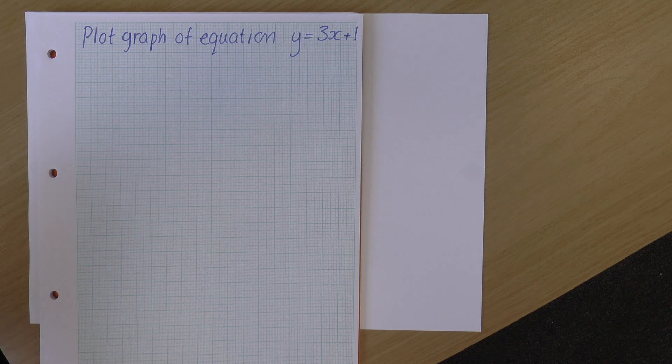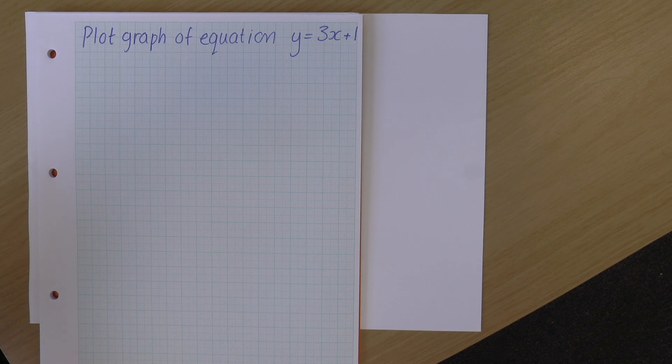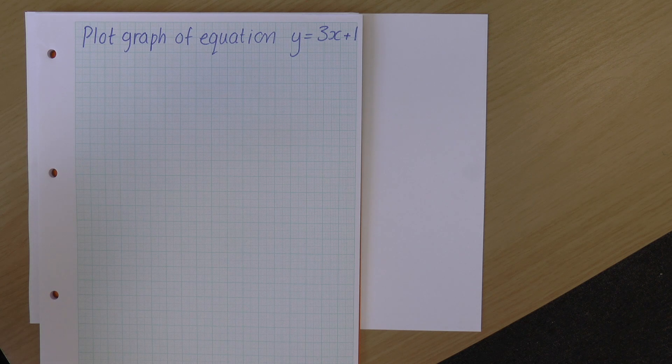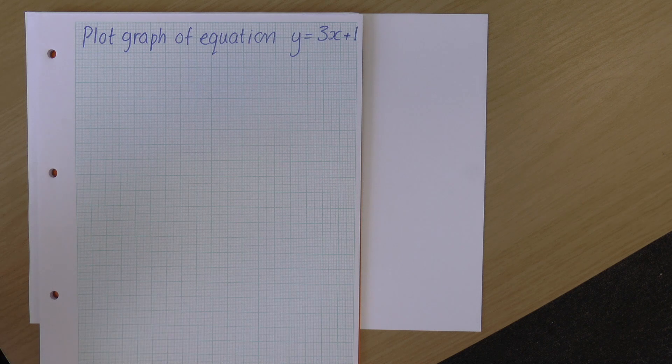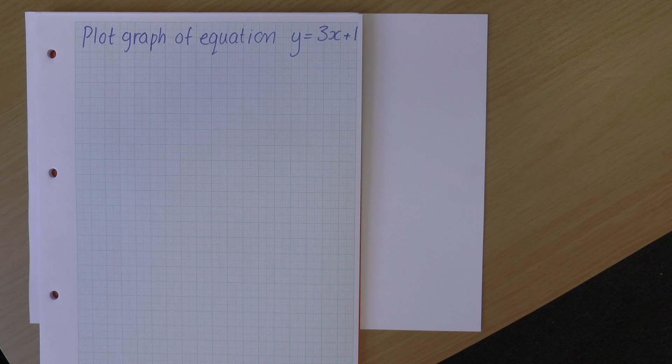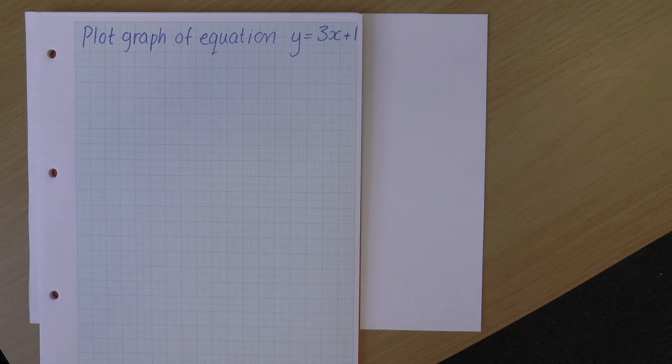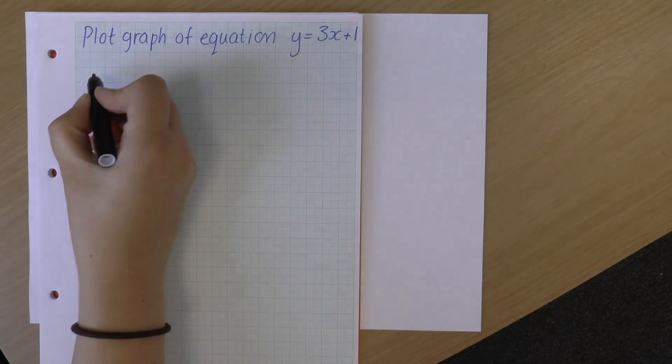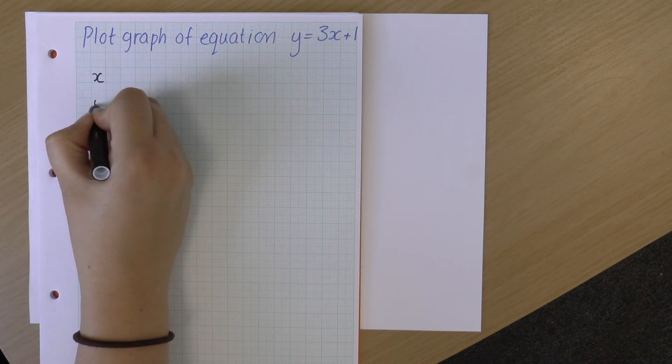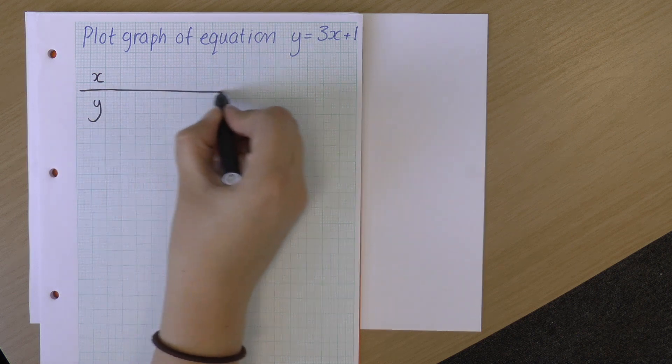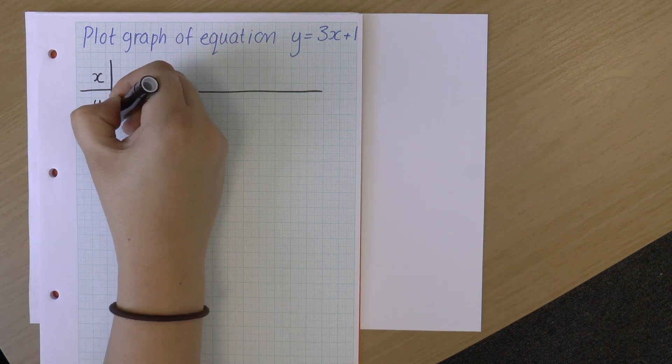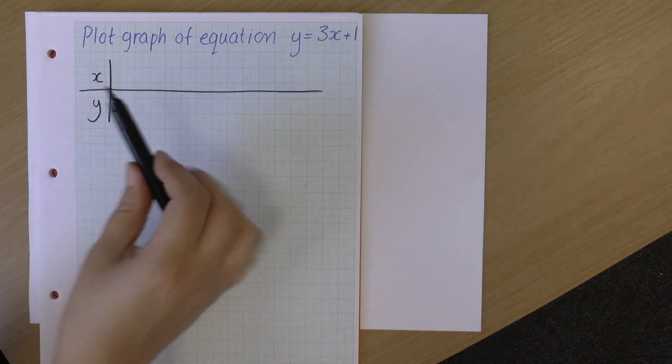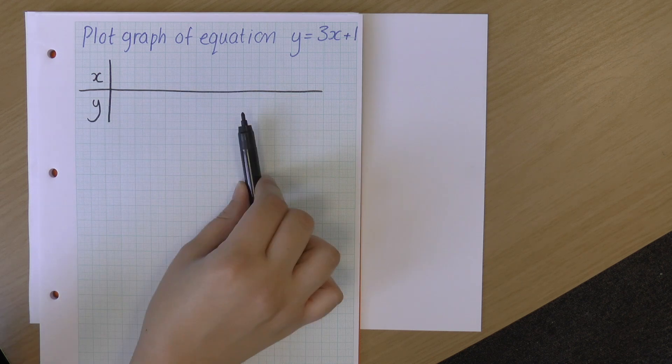So if I'm plotting a graph of equation y equals 3x plus 1, the first thing I need to do is find some values for my graph in order to plot it. And the way that I go about this is I get to choose what my values are. So the way I do it and my preference is I set up a little table that looks like that with x values and y values.